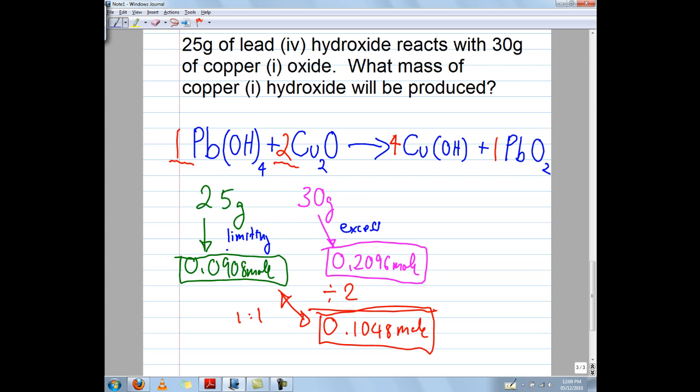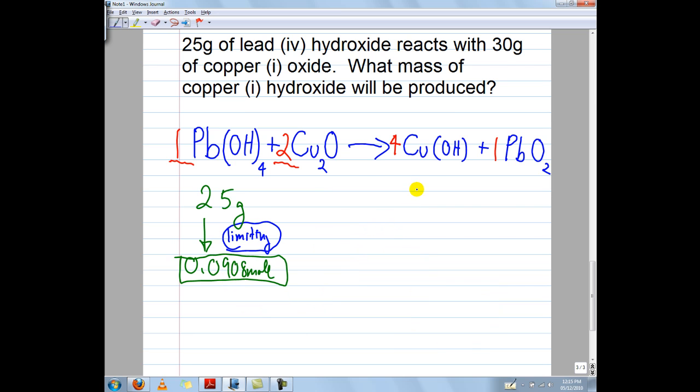Therefore, my lead 4 hydroxide is the limiting reagent, while the copper 1 oxide is going to be my excess. Any number that this one gives me would be wishful thinking, just a waste of time. This will be the true value that will tell me how much I can actually make, because this is going to run out first. Let's set up our ratios. Since I'm looking for the copper 1 hydroxide, because the question asks what mass of copper 1 hydroxide is going to be produced, I'm going to set up my ratios to find out how many moles of copper 1 hydroxide will be produced.